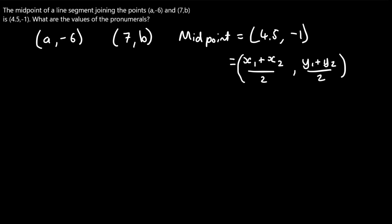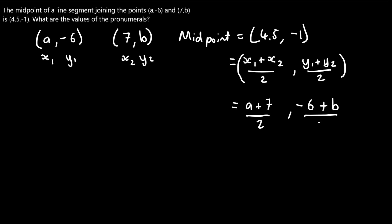So what's our x1? It doesn't matter which coordinate we choose, but let's use the left one. Let's say this is x1, this is y1, this is x2, and this is y2. This is just going to help us fill in these blanks. The x values we've got are a and 7, so a plus 7 all over 2 — we're subbing in x1 and x2. And for y1 and y2: y1 is negative 6, and y2 is b, so negative 6 plus b all over 2.